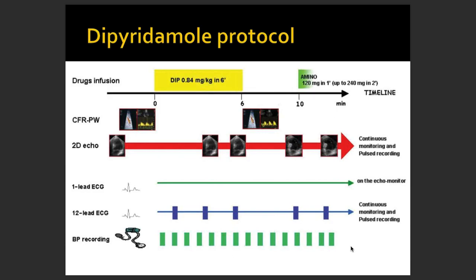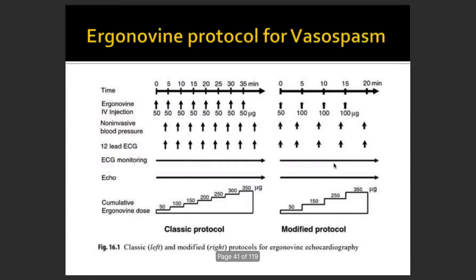The dipyridamole protocol is commonly used: at different time intervals, you keep giving the infusion and checking using 12-lead or single-lead ECG and echo images. The ergonovine protocol is less commonly used and has two types — classical and modified — where at different time intervals you monitor blood pressure, ECG, and look for any inducible vasospasm.